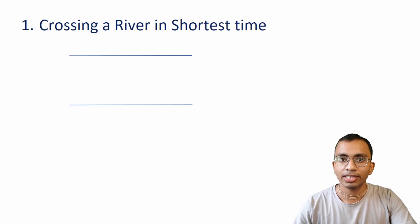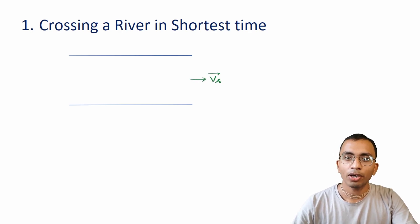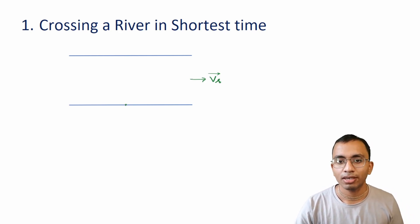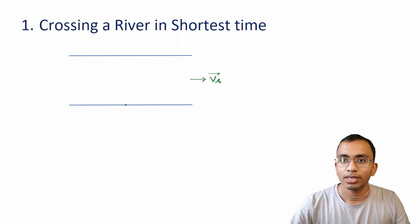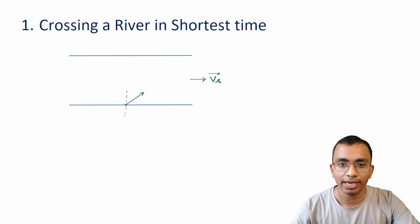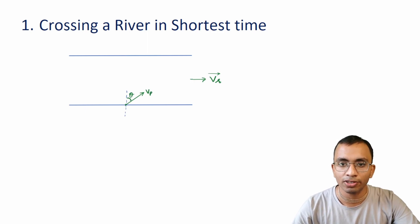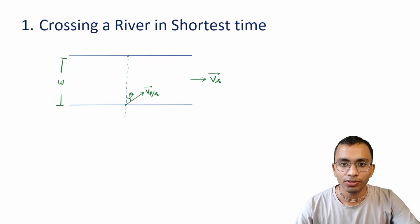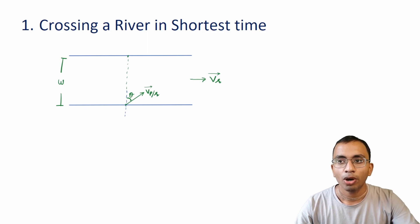Let us discuss the first case: crossing a river in the shortest time. We are given the velocity of river and the velocity of person with respect to river. Suppose the person starts swimming at angle theta. The width of the river is w. The resultant velocity is the vector sum of velocity of person with respect to river and velocity of river.